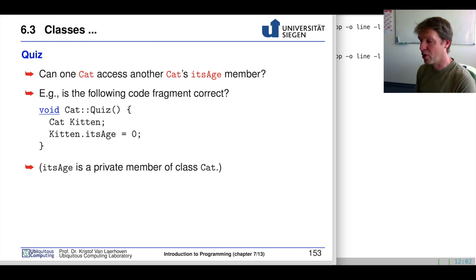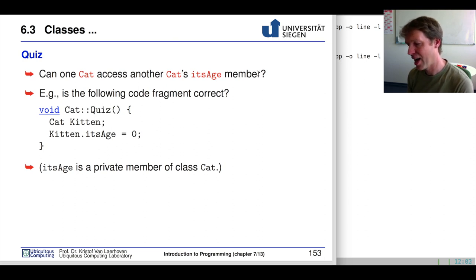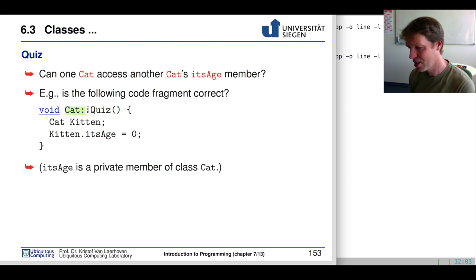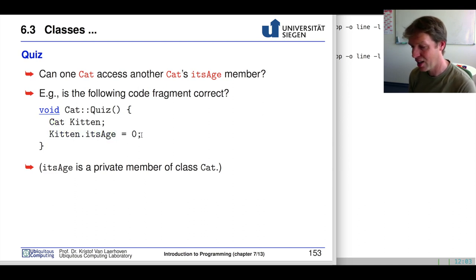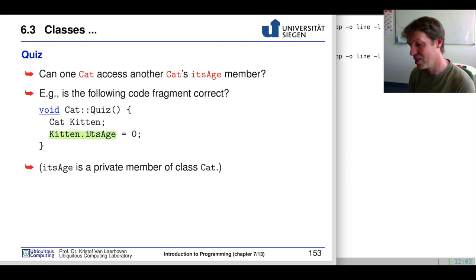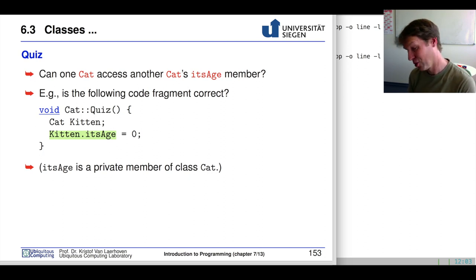Now let's go to a quiz. Can one cat access another cat's age member? So if we have a function called quiz that also belongs to Cats, and in that function we create an object called kitten of type Cats and try to set kitten's age — given that age is a private member of class Cats — would that be allowed? The only way to find out is by trying this code on the server.